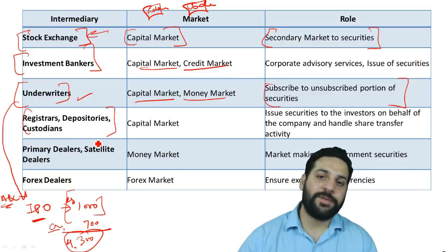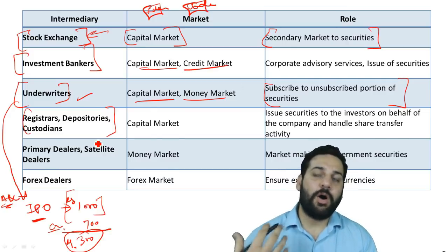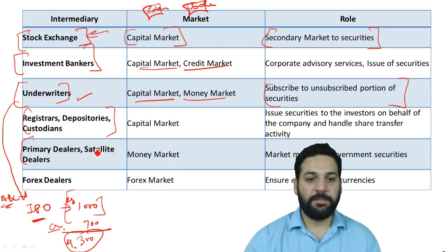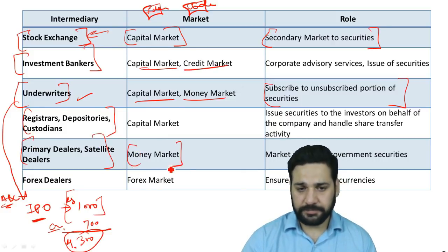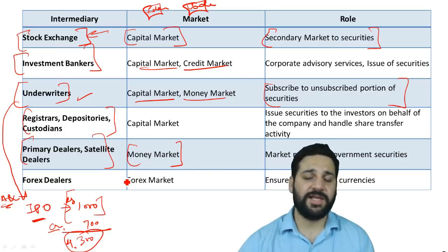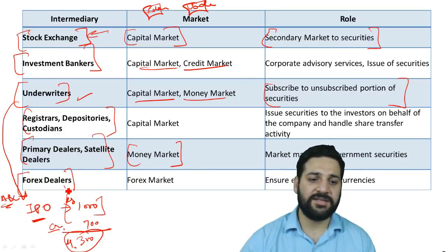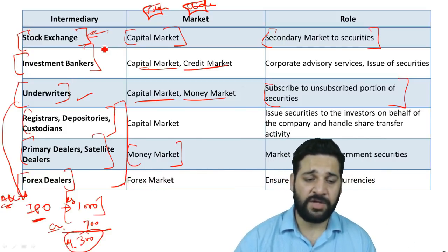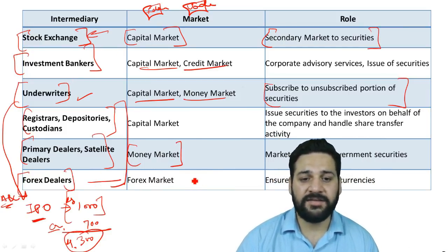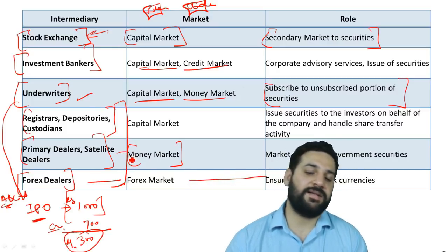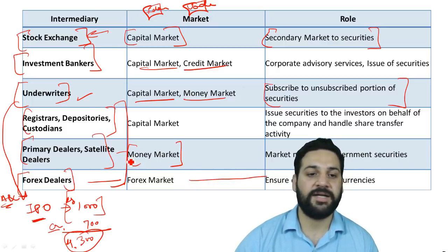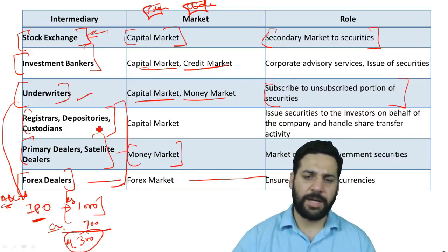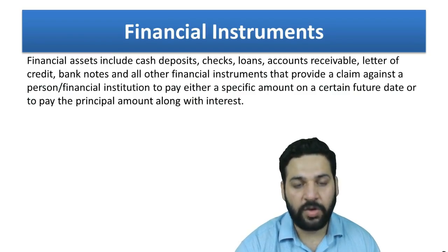Primary dealers and satellite dealers operate in the money market, while forex dealers are related to the forex market. Registrars, depositories, and custodians are related to the mutual fund industry and the capital market. Proper full-fledged lectures will be provided in the future for each of these.